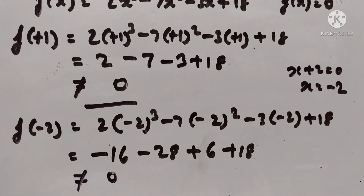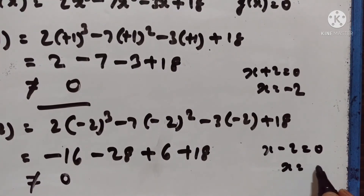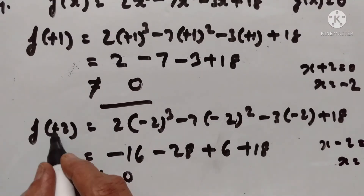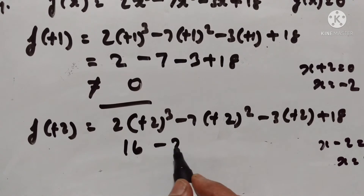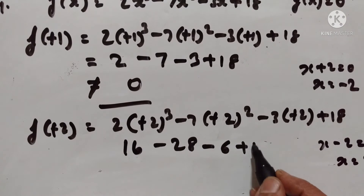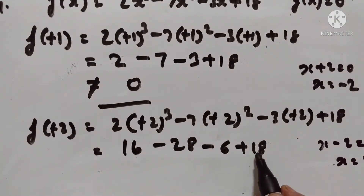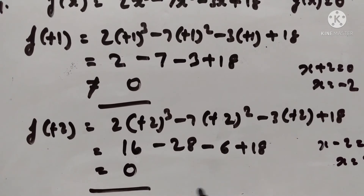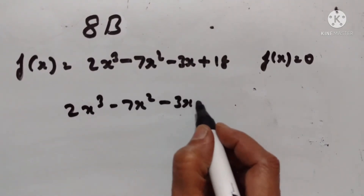Let us try x - 2. Let us see whether x - 2 is a factor of this expression. Then x should be equal to 2. f(2) = 2(2)³ - 7(2)² - 3(2) + 18 = 16 - 28 - 6 + 18. 16 - 6 = 10, and -28 + 18 = -10, so 10 - 10 = 0. Therefore, x - 2 is a factor of this expression. Let us divide this by x - 2.